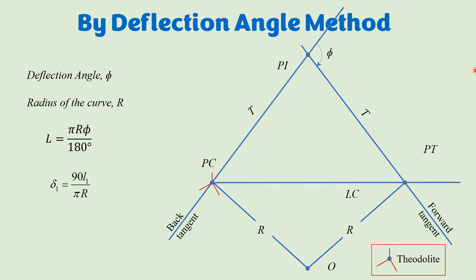Once the peg interval is decided, we calculate the deflection angle using the formula, obtaining a value as shown on the sketch. With the theodolite at PC, we first point it toward the PI and set the horizontal angle to zero. We then rotate the telescope rightward by the calculated deflection angle to establish a direction shown by the black line. We then mark a distance of l1 along that direction, and that point lies on the curve.